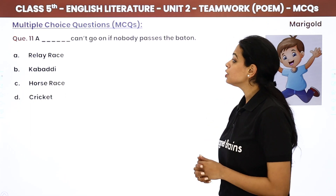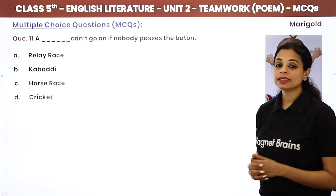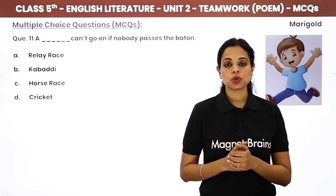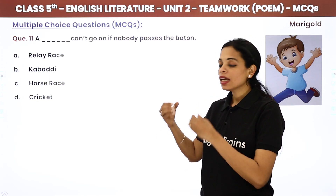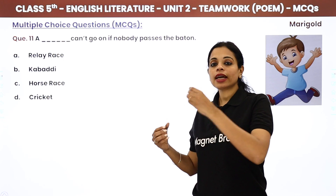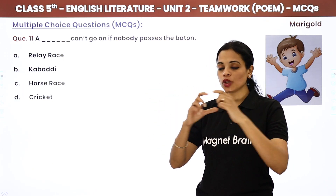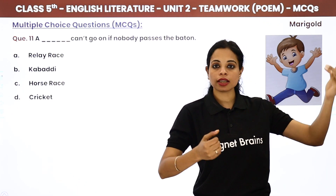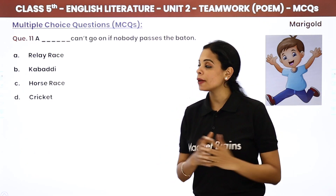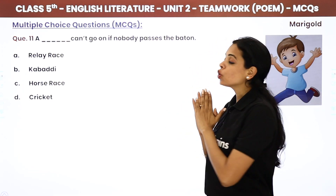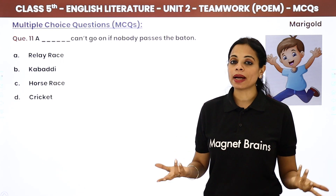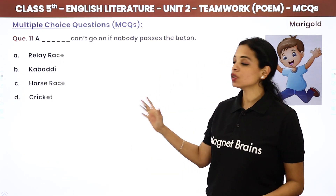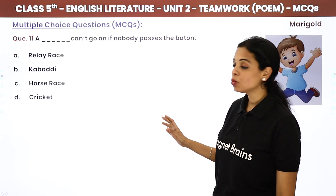A dash can't go on if nobody passes the baton. Baton is used in a relay race — one person runs holding a cylindrical object called a baton and passes it to the next runner, until the team reaches the finish line. So what cannot continue if the baton is not passed? The answer is relay race.